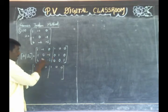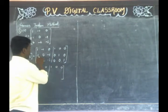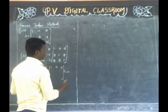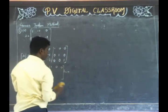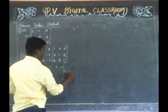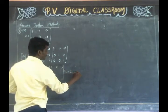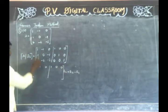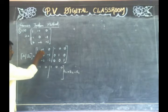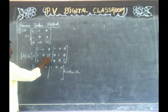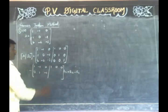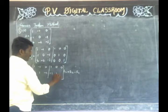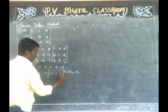R2 gives R2 minus R1. Now: 1 minus 1 is 0; 0 minus 1 is plus 1; minus 1 minus 0 is minus 1; 0 minus 1 is minus 1; 1 minus 0 is 1; 0 minus 0 is 0.